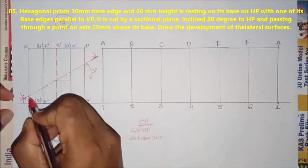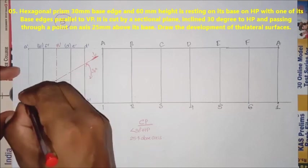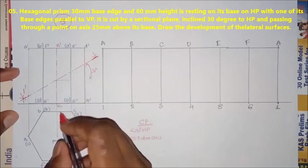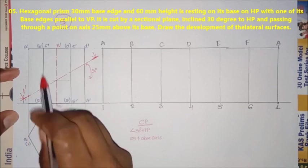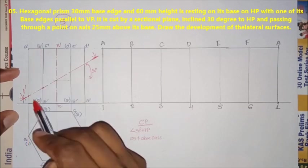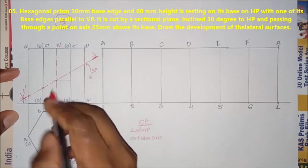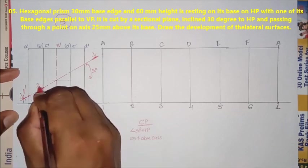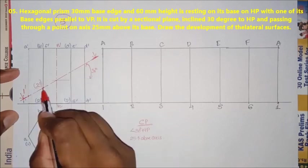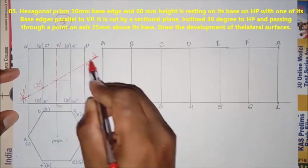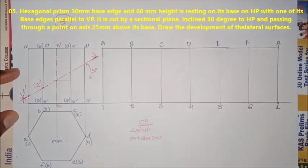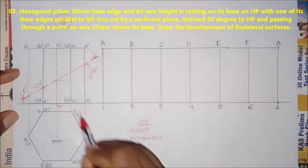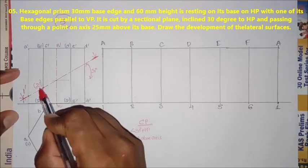A1 is the edge. The first sectional point is 1, on the A1 edge. There is an edge B2, F6. The point is 2. I have to change the point — B, C, D, E, F. The next point is here.